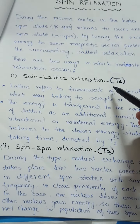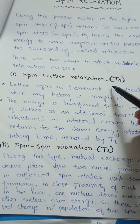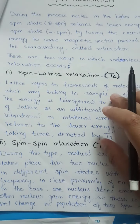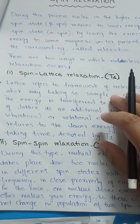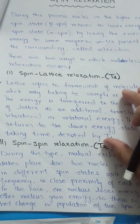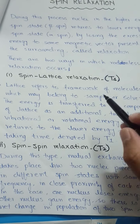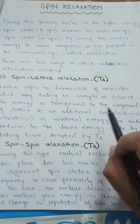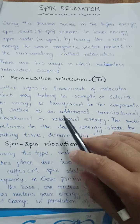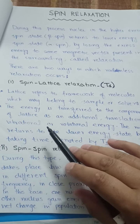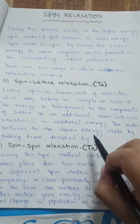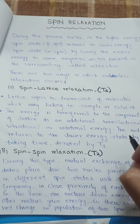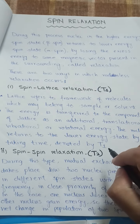The first type is spin-lattice relaxation. In this relaxation, the energy is transferred to the framework of different molecules present in the surrounding. The energy is transferred to the components of the lattice as additional translational, vibrational, or rotational energy. The nuclei return to the lower energy state over a time period denoted as T1.